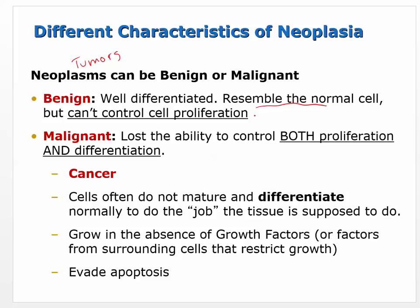A malignant tumor has lost both proliferation control and differentiation, so it's very difficult to look at a malignant cell and tell what kind of tissue it was. You can trace it back using markers, since the proteins on the cell may be the same. Malignant tumors often do not mature and differentiate normally, so whatever the original cell was supposed to do, it's not doing it anymore — or in some cases it does too much, like producing hormones.